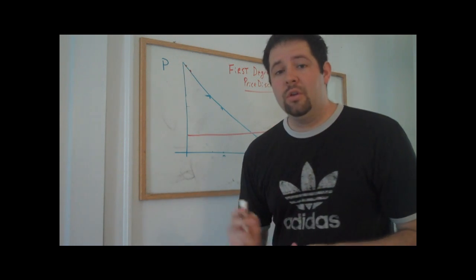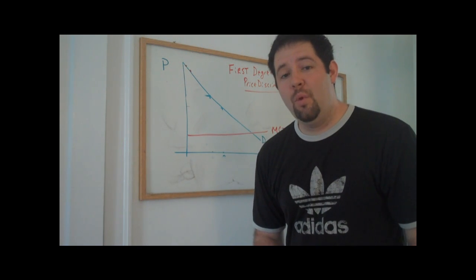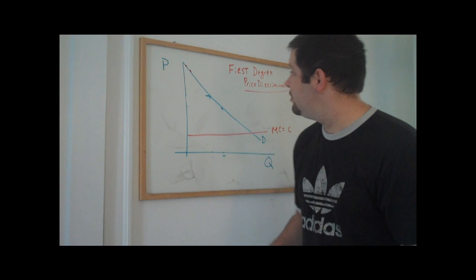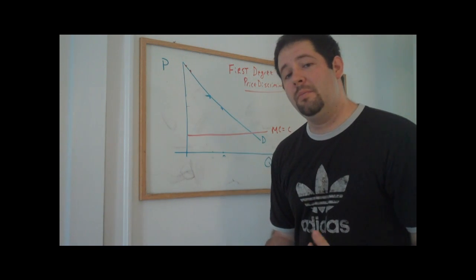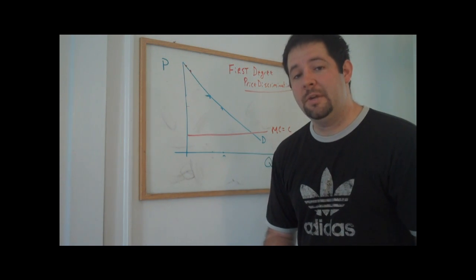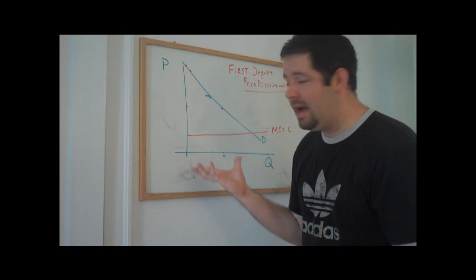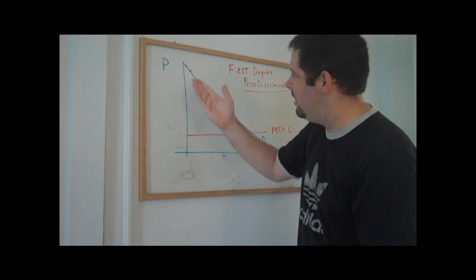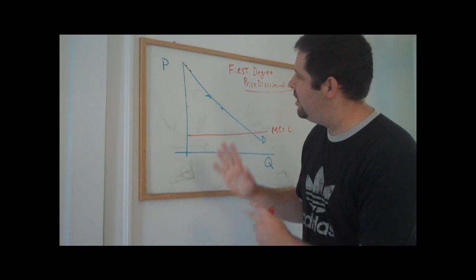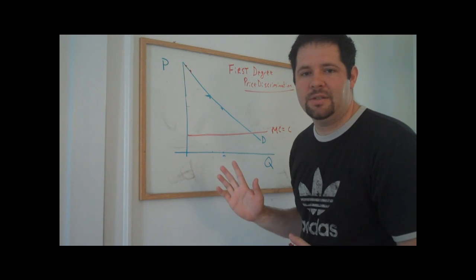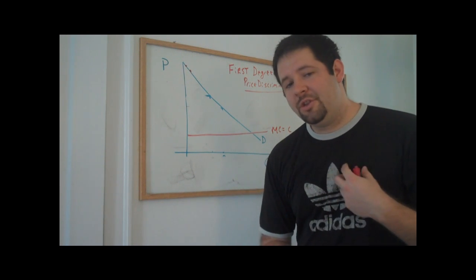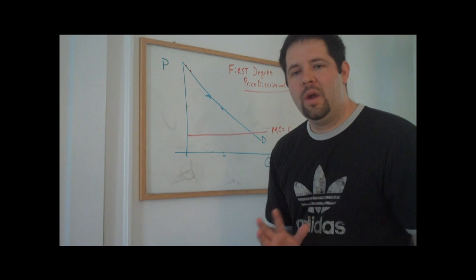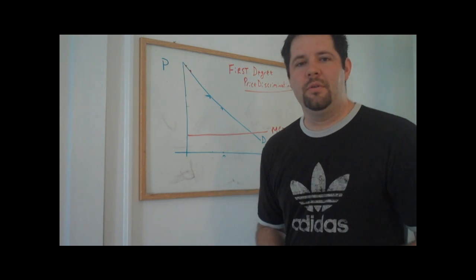In the real world, it's really hard to actually get away with first-degree price discrimination because these consumers are not going to be willing to reveal this information to the supplier, that they're willing to pay a high amount. And so we don't typically see first-degree price discrimination. But imagine one particular way of trying to get away with first-degree price discrimination.